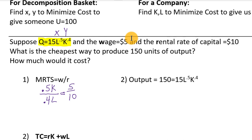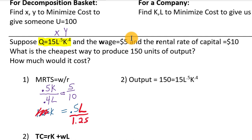Simplifying: (0.5/0.4) × (K/L) = 1/2, so 1.25 × (K/L) = 0.5. Multiply both sides by L, then divide both sides by 1.25. This gives us K = 0.4L. So the optimal amount of capital is 0.4 times the amount of labor used.